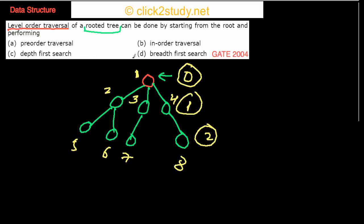If you look at all these options, think about which sort of search or traversal is going to go level by level. If you think about it, you know the answer is breadth first search. In breadth first search, you start at the root — write one for root — and then you traverse the nodes adjacent to it. The nodes adjacent to the root are two, three, and four, so you go to them next.